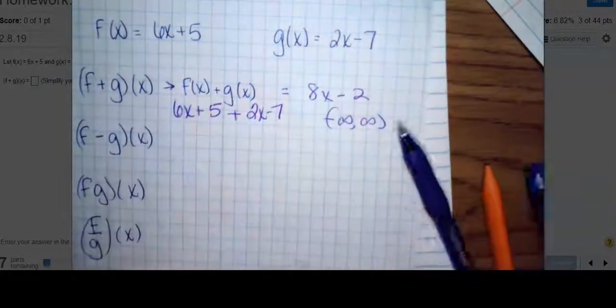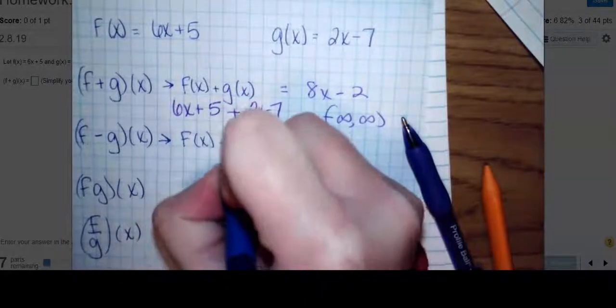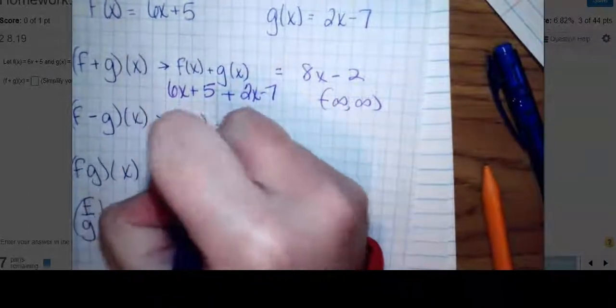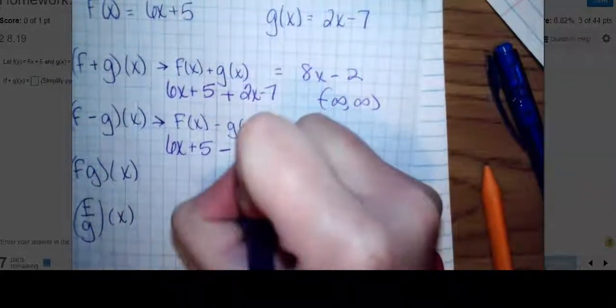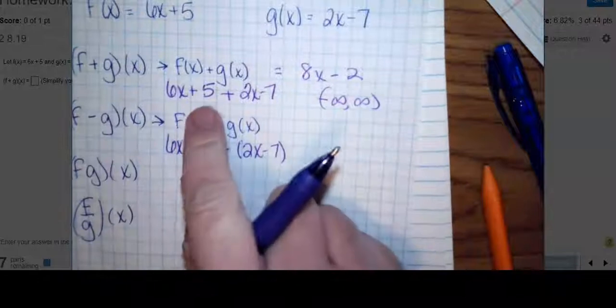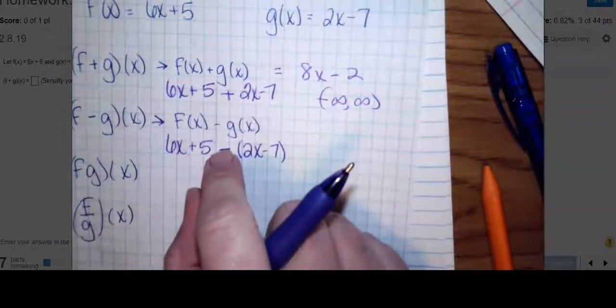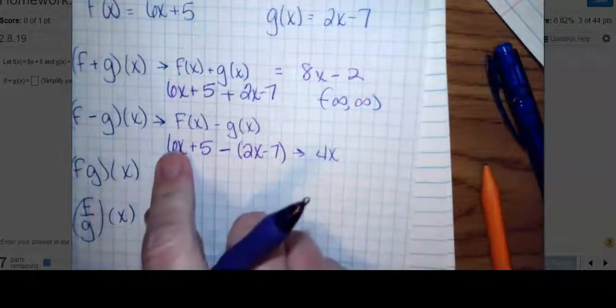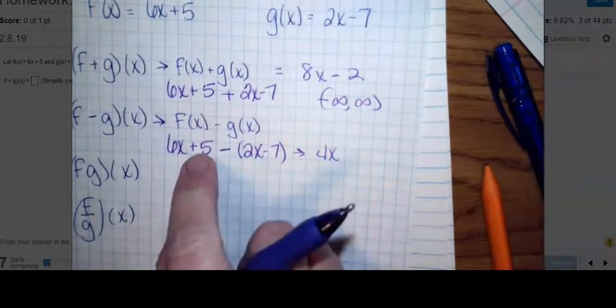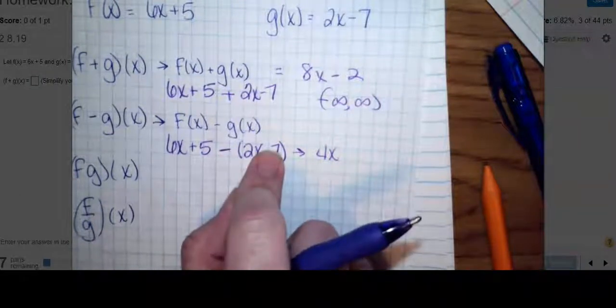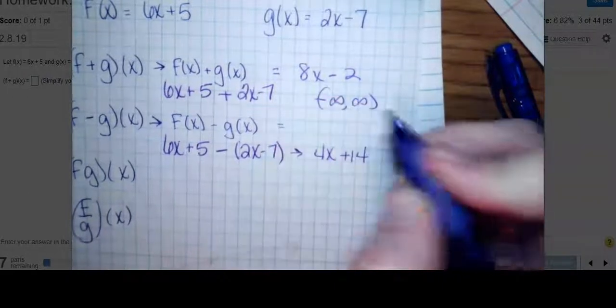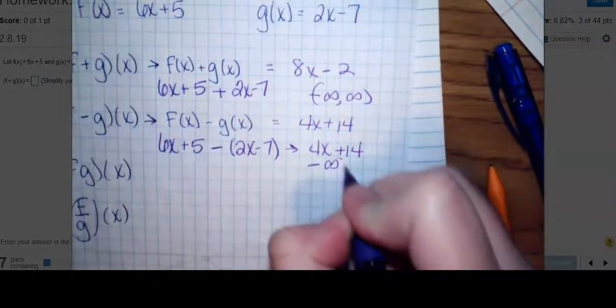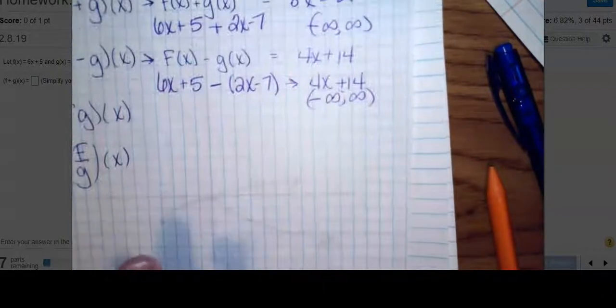Now I'm supposed to subtract. I've got f(x) - g(x), which is 6x+5 minus (2x-7). I didn't use parentheses before because addition wasn't going to change the signs. Subtraction is. That gives me 6x - 2x is 4x. 5 minus negative 7 is 12. So I end up with 4x + 12. What's your domain? Unless you see variables in denominators or under even roots, your domain is all real numbers.